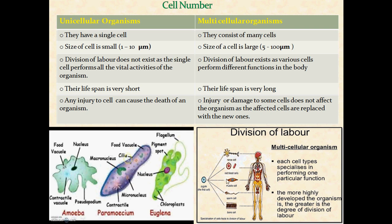These different functions are performed by specialized cells. The nerve cell transforms information from the brain to different body parts. The red blood cell contains hemoglobin, which absorbs oxygen and transports it to different body parts. Hemoglobin also imparts the red color to blood.